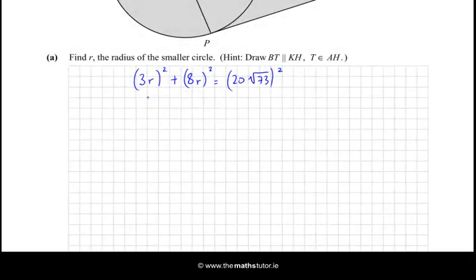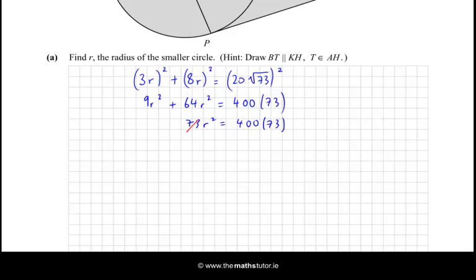3R squared is 9R squared, and 8R squared is 64R squared. If we square 20, we get 400, and if we square root 73, we just get 73. So let's add the two R squareds together, and we get 73R squared. Well, that's nice, because I just divide across by 73, and then we have that R squared equals 400. So we have the square root of 400, which is 20 again. So we found the length of R, 20 centimeters. So it's a good idea to put in the units in all of these.